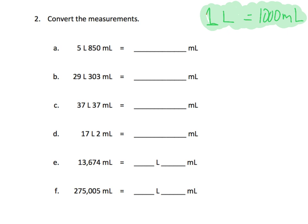For example, let's look at problem A. So, 5 liters — remembering that each liter is 1,000 milliliters, so if you have 5 liters, that's 5,000 milliliters, plus you already have that 850 milliliters, so all together you now have 5,850 milliliters. Piece of cake — that's basically all we're doing.